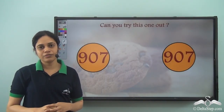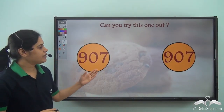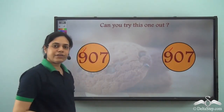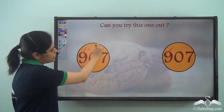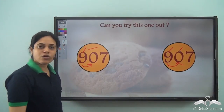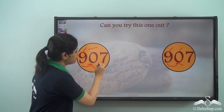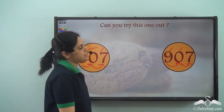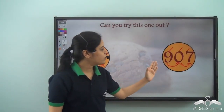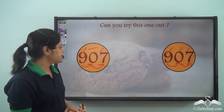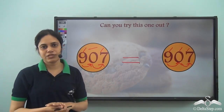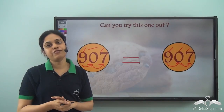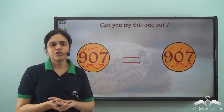Now try this one on your own. We have two three-digit numbers to compare. First digit: nine and nine — same. Next digit: zero and zero — same. Next digit: seven and seven — same. All the digits of this number are equal to the digits of the other number, so 907 is equal to 907. This is how you can compare any two numbers, no matter how big they are, using these tricks.